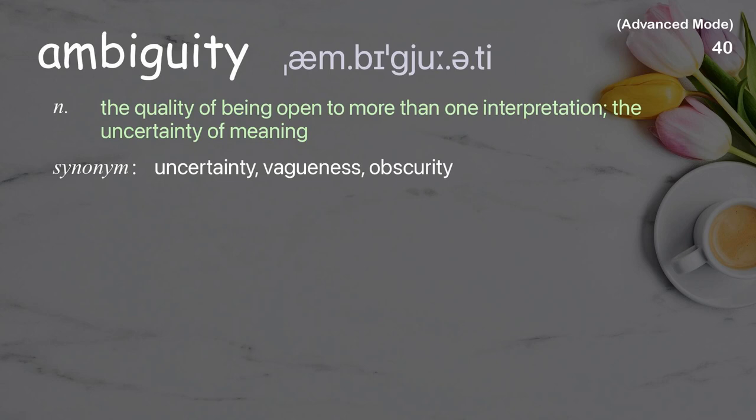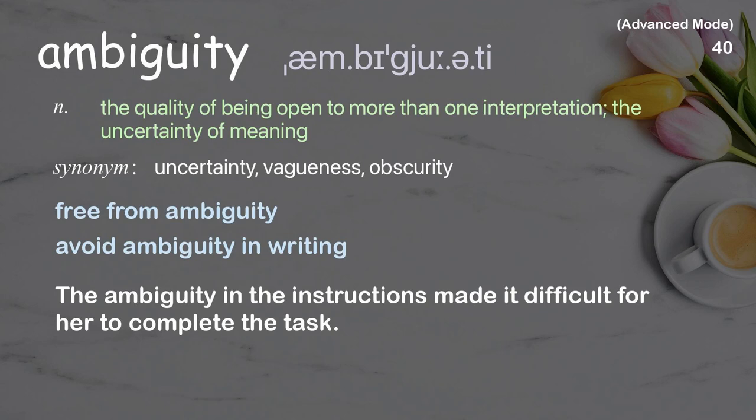Ambiguity. The quality of being open to more than one interpretation; the uncertainty of meaning. Examples: free from ambiguity, avoid ambiguity in writing. The ambiguity in the instructions made it difficult for her to complete the task.